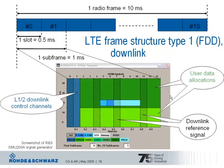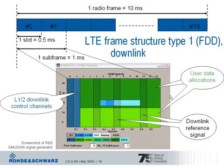You can also see at certain allocations the downlink reference signals. In this special subframe — the first one in a radio frame — there are also synchronization and broadcast channels: the primary synchronization channel in blue, the secondary synchronization channel, and the physical broadcast channel PBCH, which carry predefined information important during cell search.